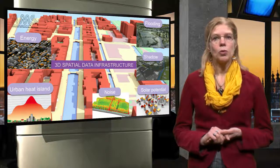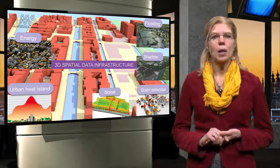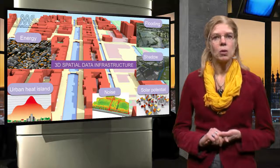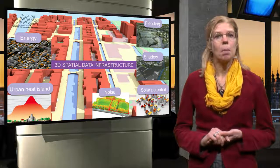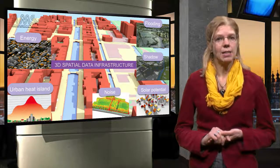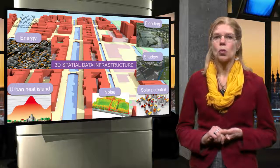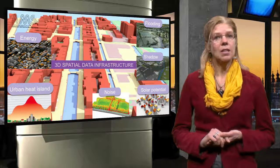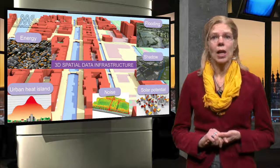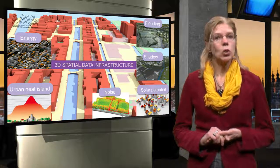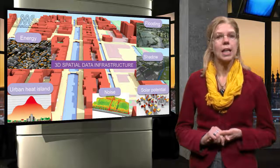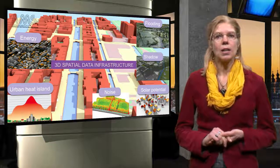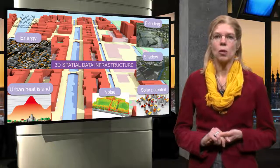To solve the ad-hoc use of 3D data, we need a 3D spatial data infrastructure that provides 3D data about cities, buildings and landscape in order to serve a wide variety of urban applications. Besides the technological challenges to collect 3D data once and use it multiple times via a data infrastructure, there are major legal and governance challenges to overcome.